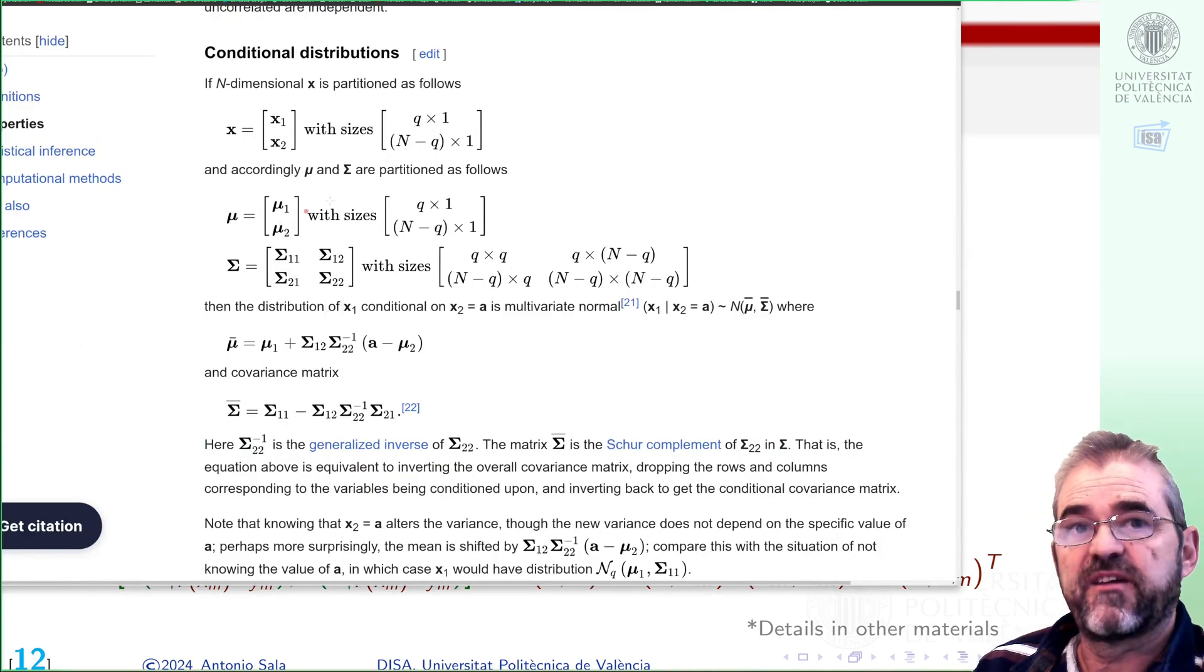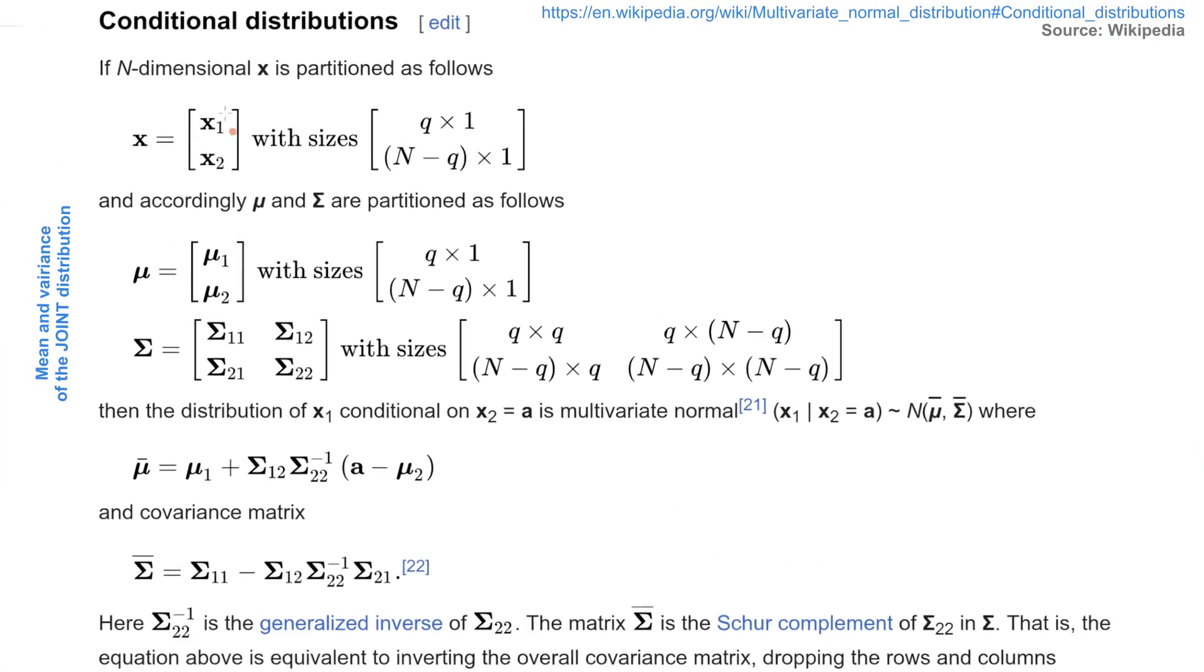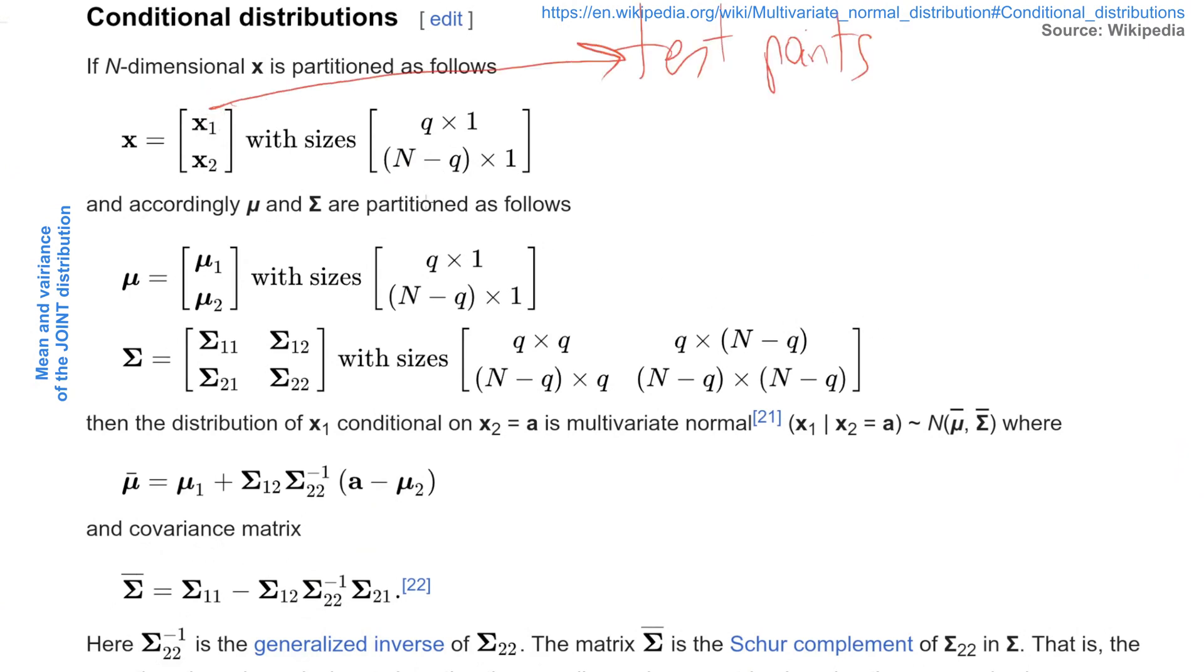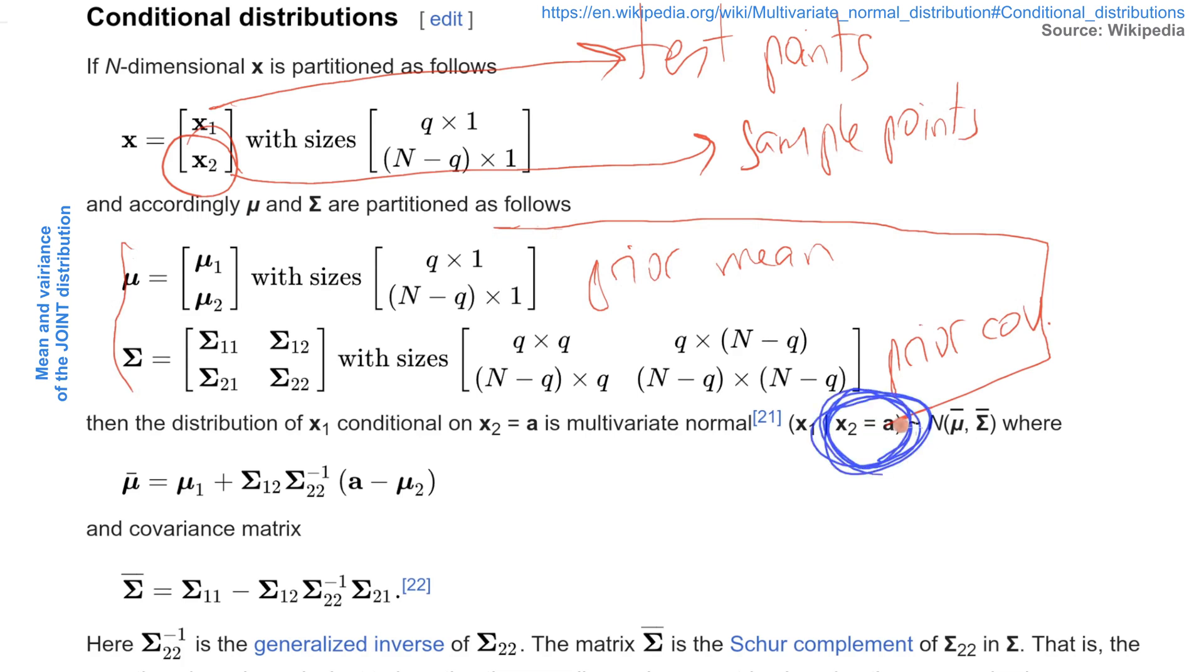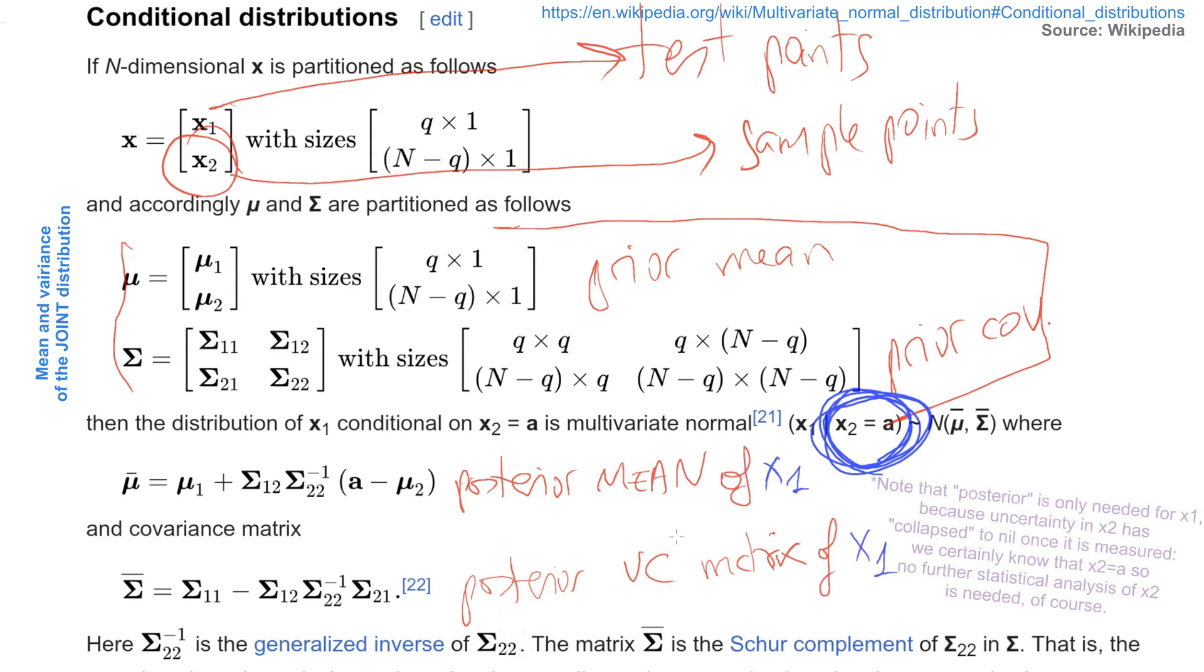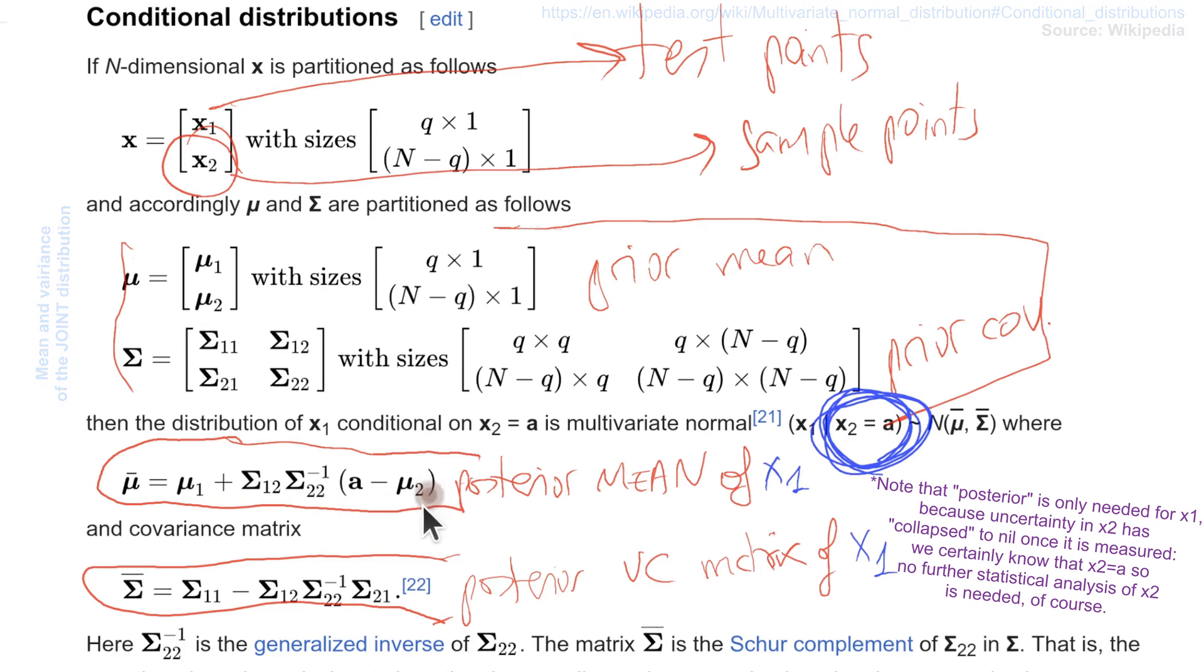If I have a multivariable normal, in which I have some x1 points, which will be test points, and x2, which will be sample points, and I have a prior mean and a prior covariance matrix, then if I sample and I observe that x2 took a given value a, then it can be proved that the posterior mean and the posterior covariance matrix of my test points is given by this formula: prior mean plus some covariance times inverse of information variance times the innovation, the difference on what I observed minus the mean of the observed variable, and this variance reduction due to the information I got.